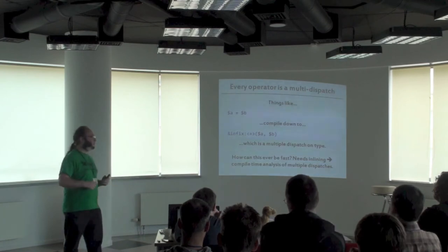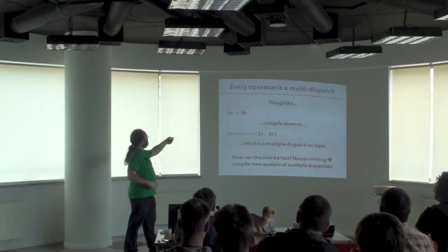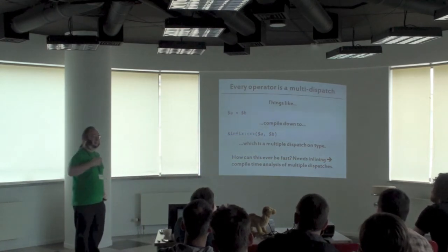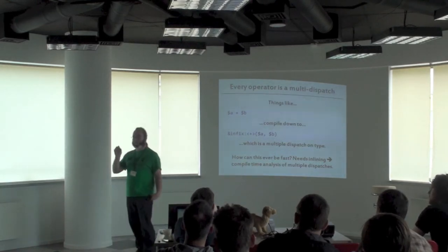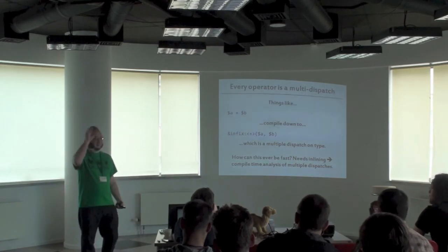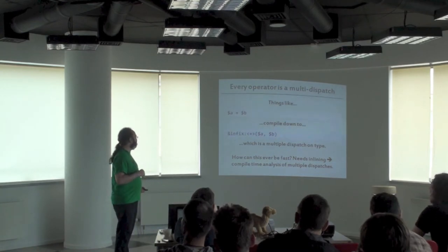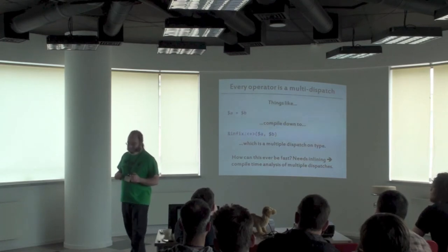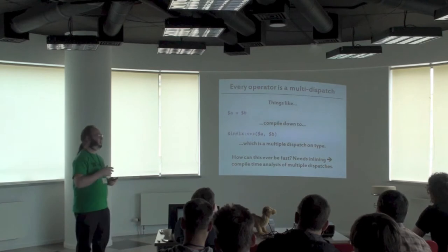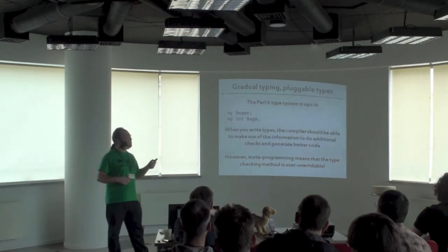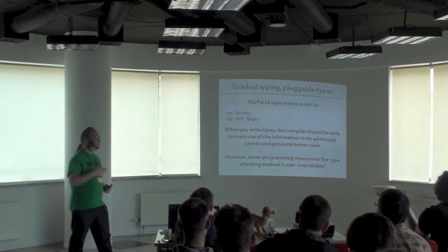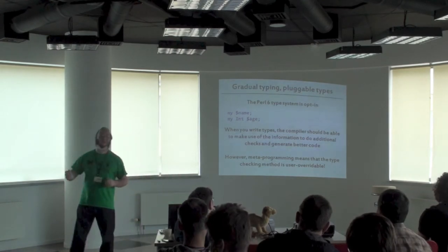Then there are optimization problems. What's an operator? It's a call. When you write a + b, it calls infix:plus on a and b — and that's a multiple dispatch call with a bunch of candidates: one for integer addition, one for rational, one for complex. If we actually do that full call for every single time we write plus, that's going to be really slow. So we need to do dispatch call inlining, and to do that we have to be able to analyze calls like this at compile time. We need to build a very rich model of the program, and not just for the types — because people can introduce their own types and, because we support metaprogramming, they can change what type checking means, which we also have to take into account when we optimize.